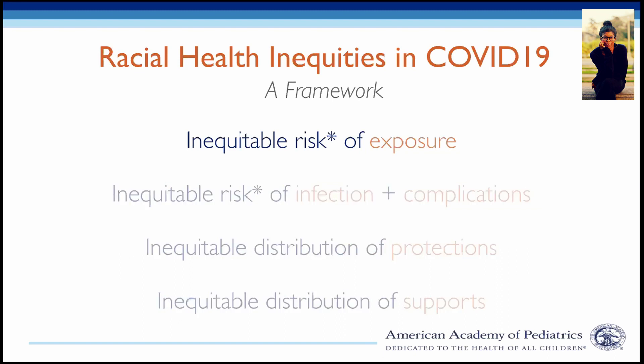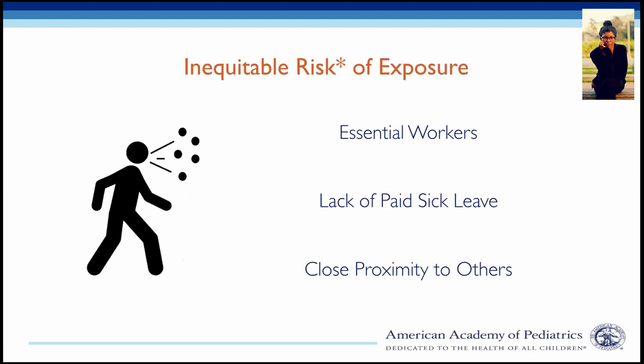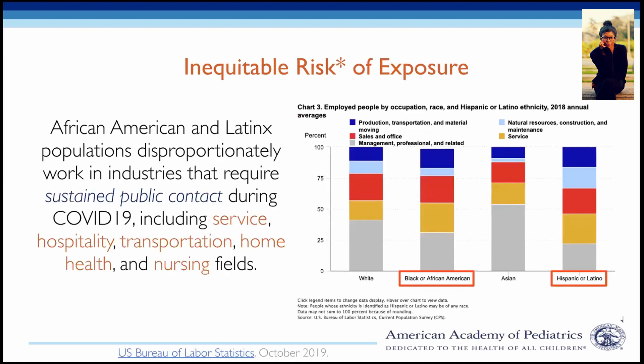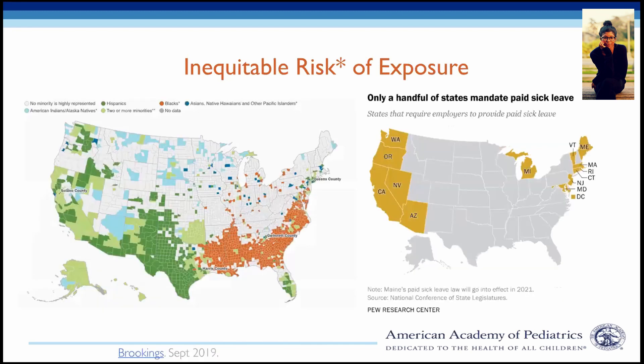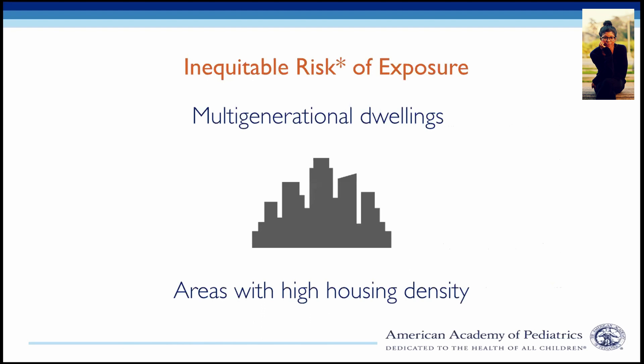COVID-19 is primarily transmitted through droplets that can infect humans directly or indirectly through contaminated surfaces. Exposure is higher for essential workers, those who lack paid sick leave, and those who live, work, learn, or play in close proximity to others. Across the U.S., African American and Latinx populations — particularly women — disproportionately work in industries requiring sustained public contact during COVID-19. African American, Latinx, and Indigenous populations also have disproportionately less access to paid sick leave because they garner lower wages and predominantly live in states that fail to mandate such protections.